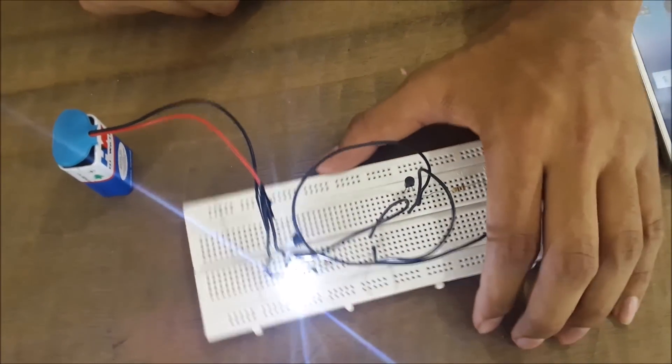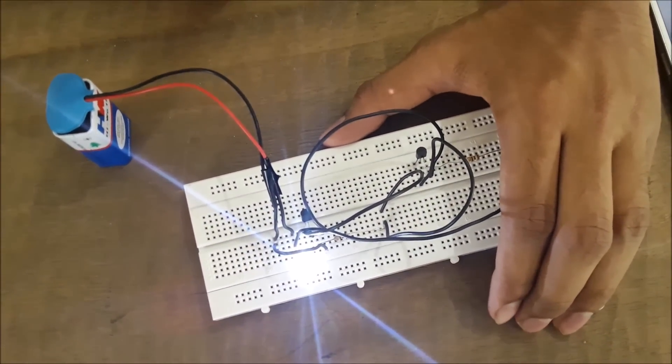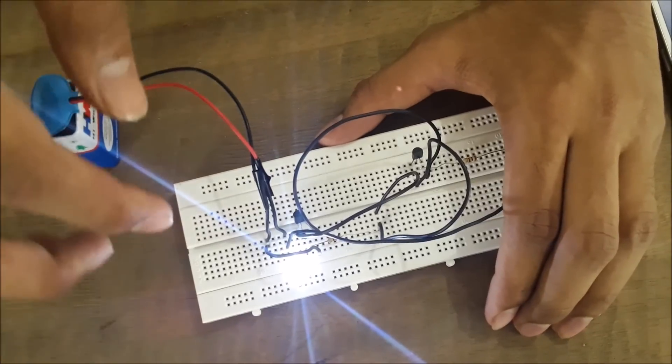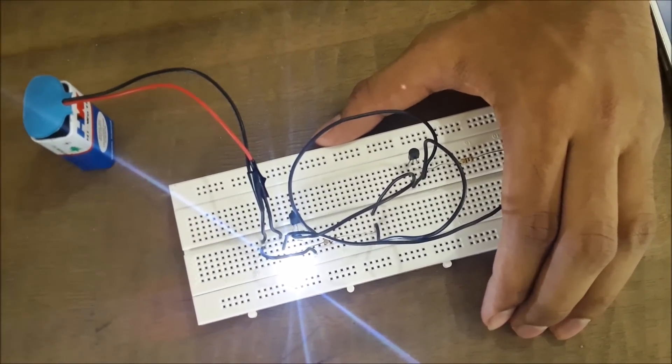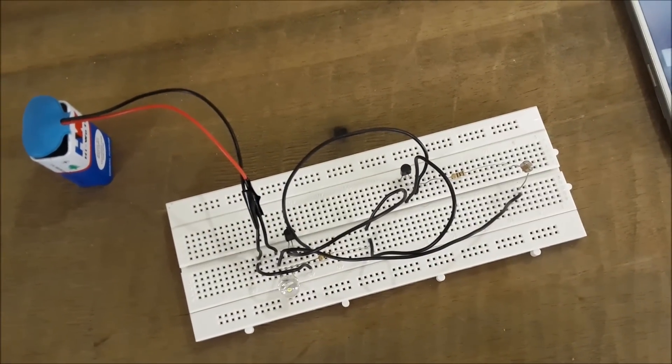The more I make the circumstances darker around the LDR, the LED lights brighter. So here is the automatic street light project.